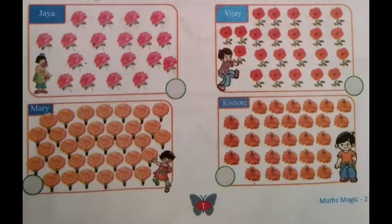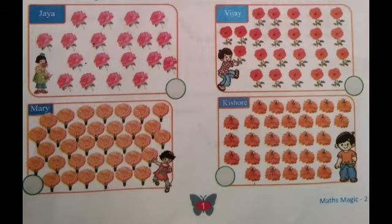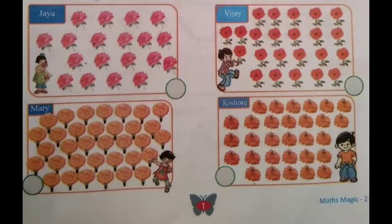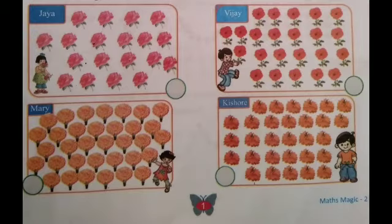Rose flowers, hibiscus flowers, marigold flowers and dahlia flowers. Now see how many flowers Jaya counted. Count the rose flowers: 1, 2, 3, 4, 5, 6, 7, 8, 9, 10, 11, 12, 13, 14, 15, 16, 17, 18, 19.